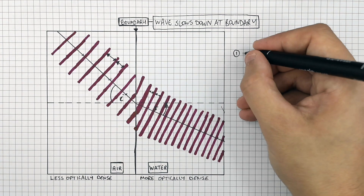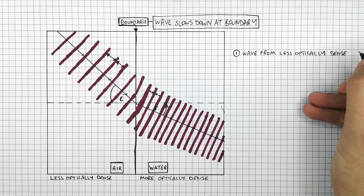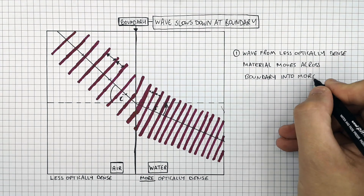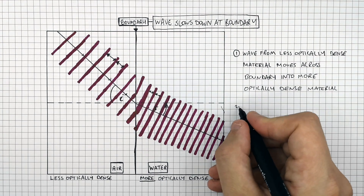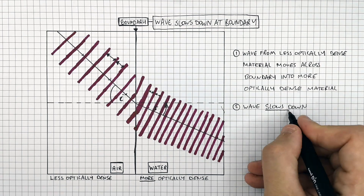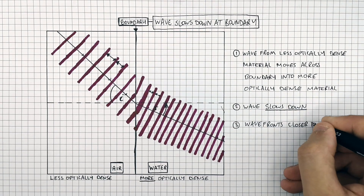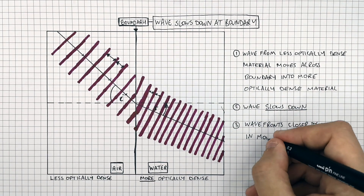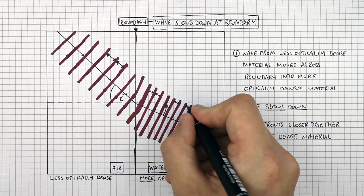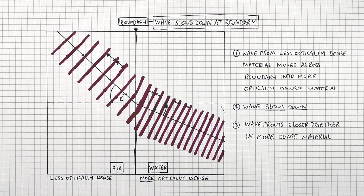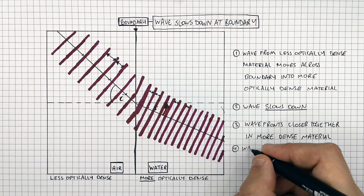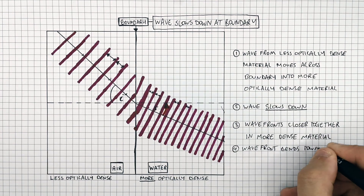To summarise: the wave moves from a less optically dense material across the boundary into a more optically dense material — from air into water. The wave slows down, so the wavefronts are now closer together in the more dense material, and the wave bends towards the normal.